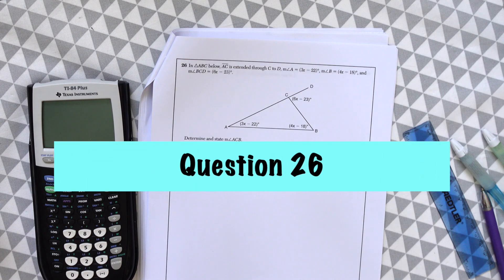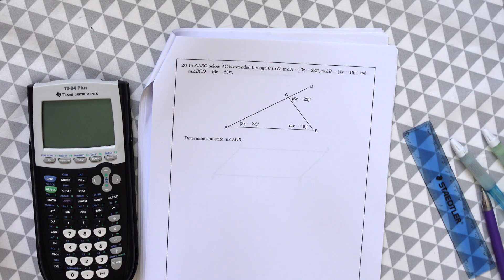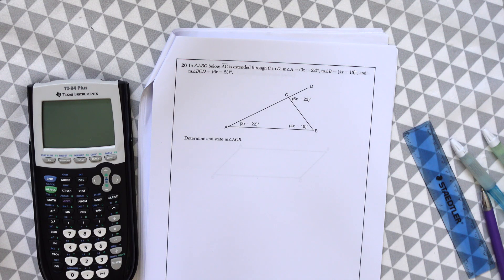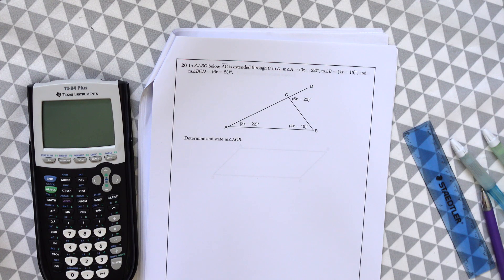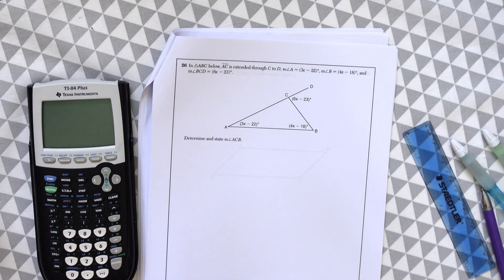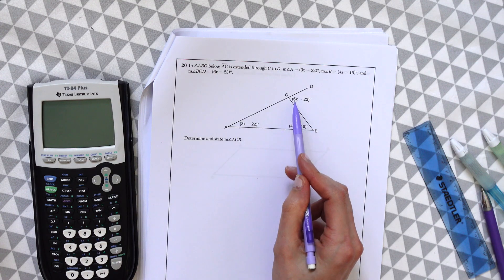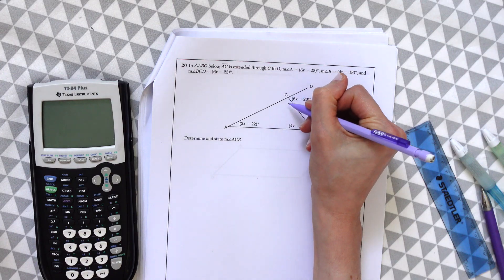Question 26. In triangle ABC below, AC is extended through CD. Angle A is equal to 3x minus 22 degrees. Angle B is 4x minus 18 degrees. And angle BCD over here is 6x minus 23 degrees. Determine and state the angle of ACB. So we're looking over here.